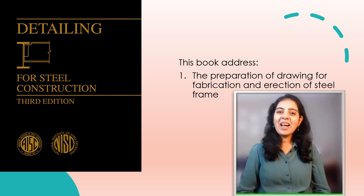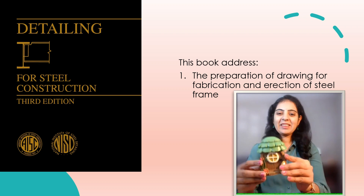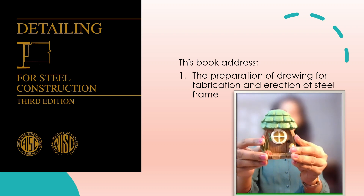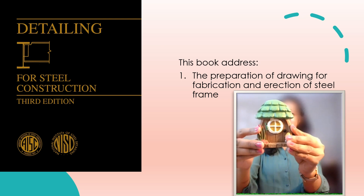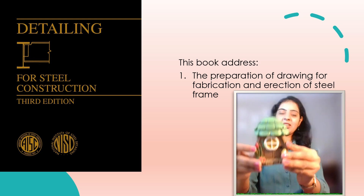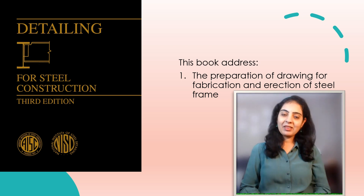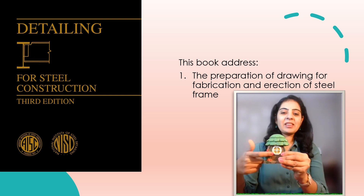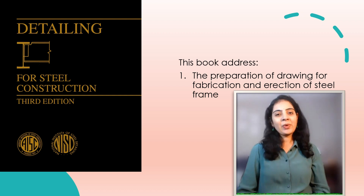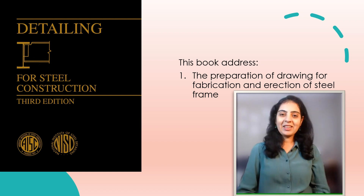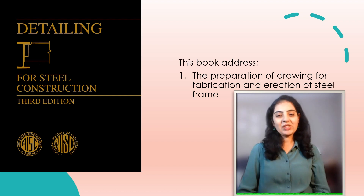Look at this building — what you see is its skin, which may be made of wood, concrete, metal panels, glass, stone, or masonry. Behind this skin there is a frame or skeleton, which may be of concrete, wood, masonry, or even steel. In this book we will see the preparation of drawings for the fabrication and erection of a steel frame.